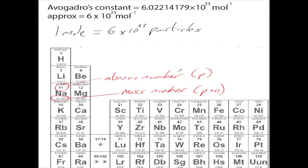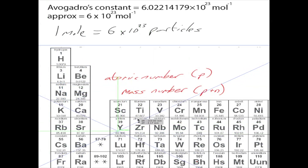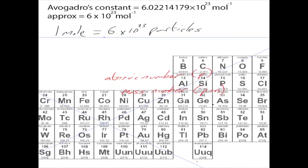If we make a molecule — let's take water, which is made of hydrogen and oxygen — hydrogen has a mass number of about 1, and oxygen has an atomic number of 8 but a mass number of nearly 16.